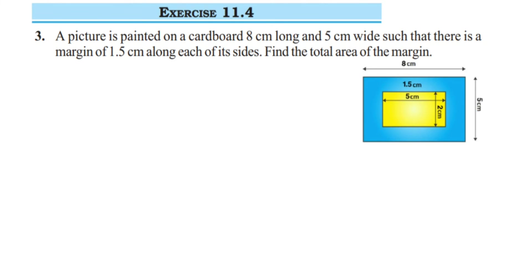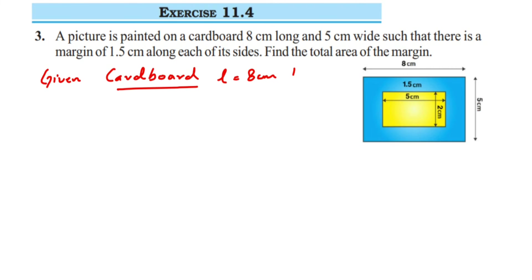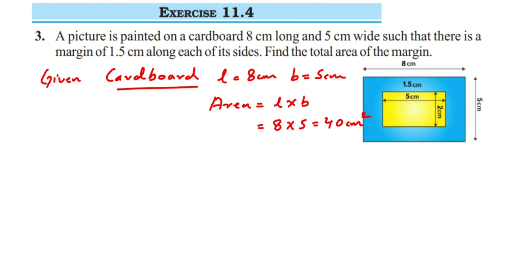First, about the cardboard: the length is given as 8 centimeter and the breadth is 5 centimeter. Since the shape is a rectangle, area equals length multiplied by breadth, so 8 multiplied by 5 gives us 40 centimeter square.